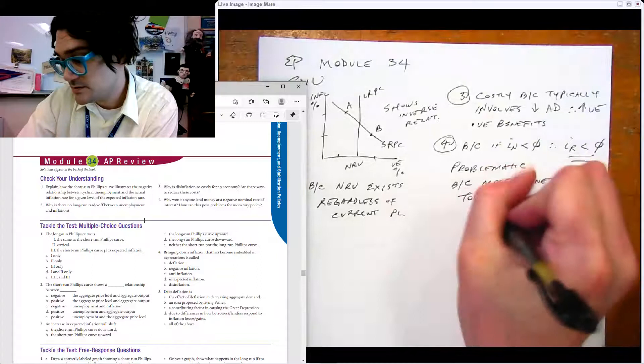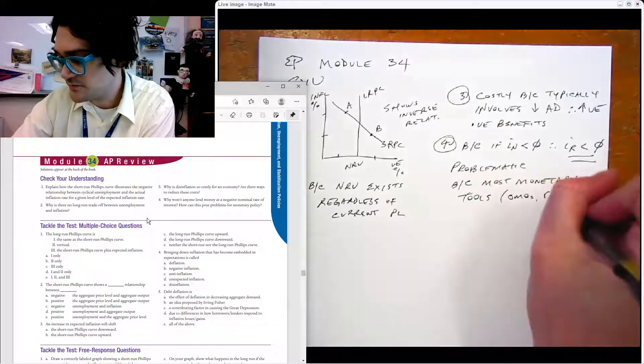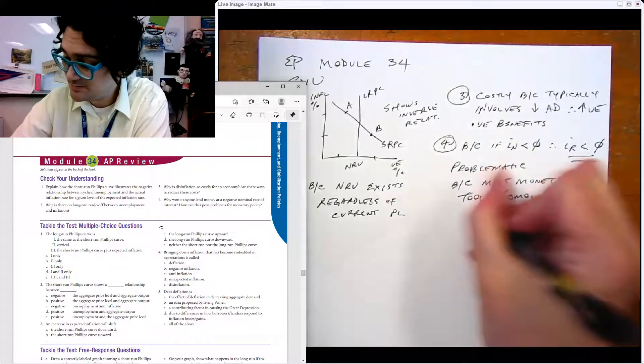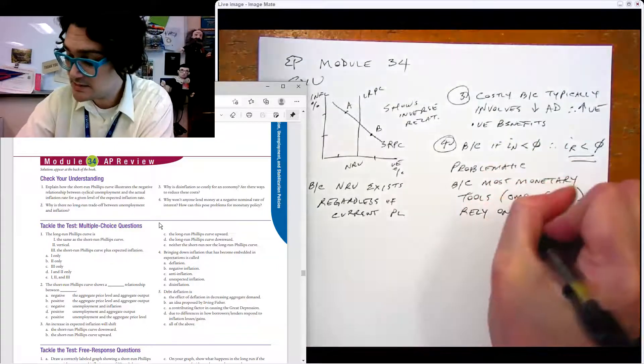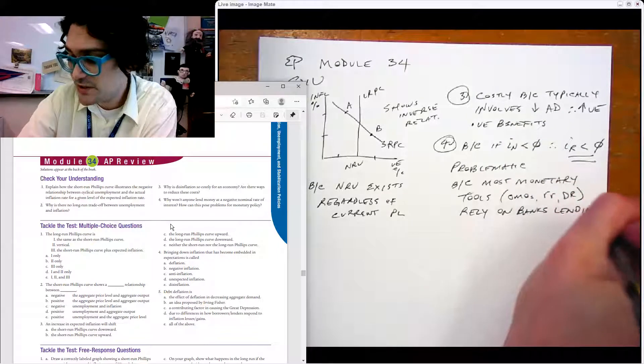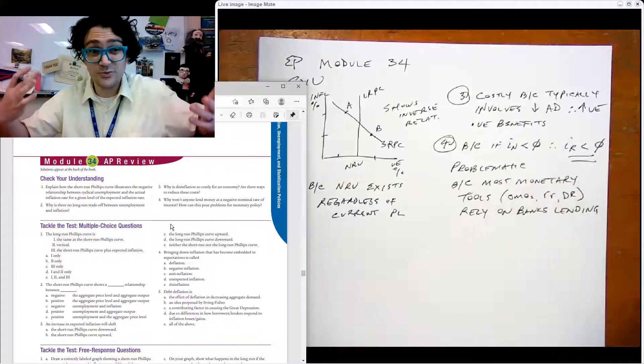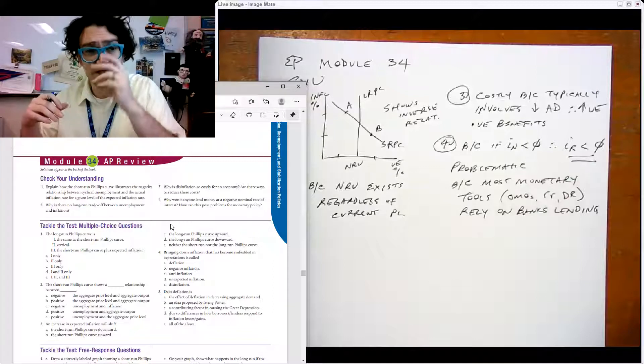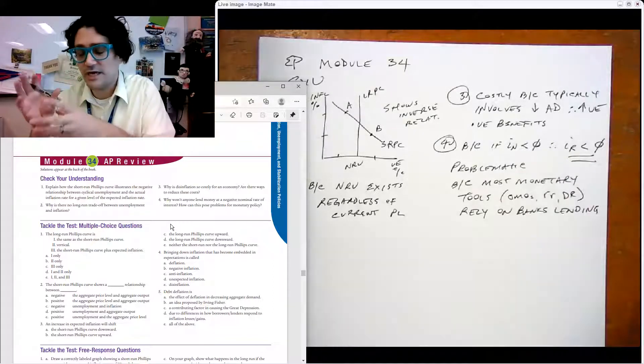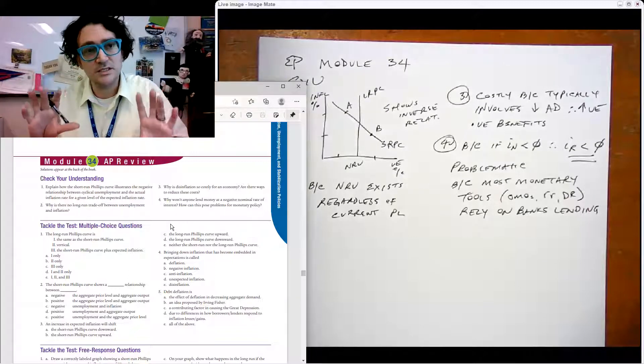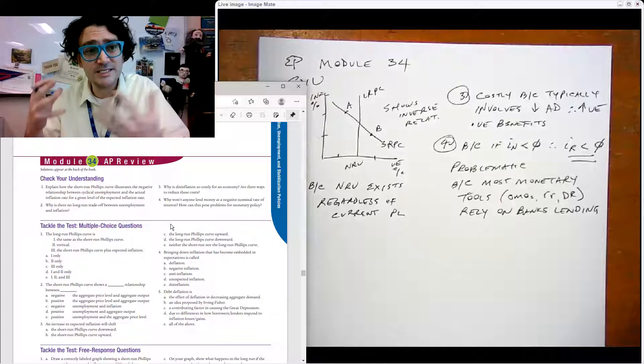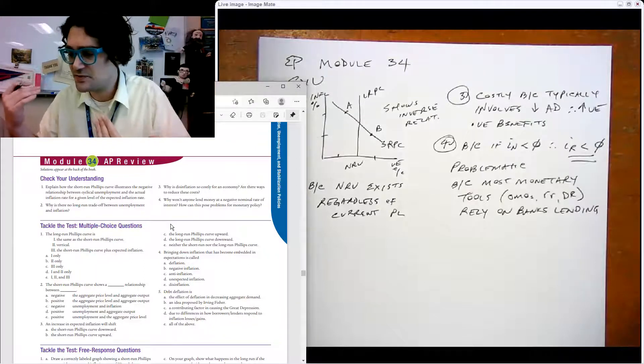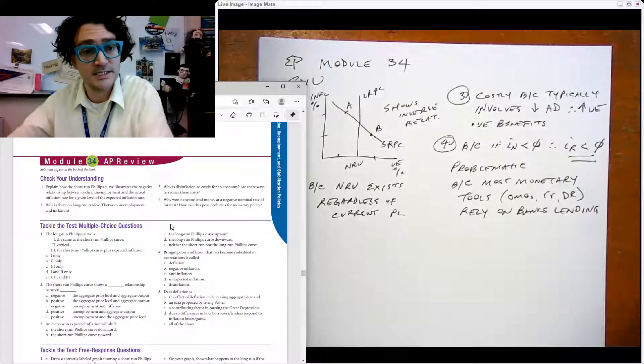This is problematic because most monetary policy tools like open market operations, the reserve requirement, the discount rate, those all rely on banks lending money. If the nominal interest rate has a floor below which it can't really go, like some central banks like the European Central Bank have explored negative nominal interest rates, but it really makes the system wonky. The Fed has been very reticent to do that. The problem is it limits the effectiveness of the monetary tools because once you get to that floor, there's really no reason for banks to lend money.